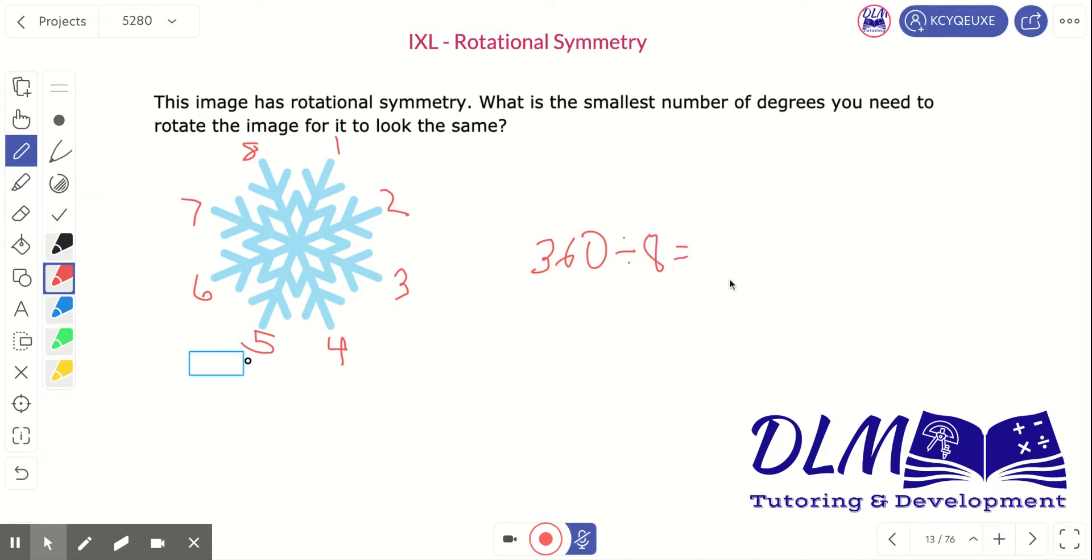How many degrees to rotate it in the least? This is going to give us 45 degrees. And if you're writing this on a piece of paper, don't forget to give that degree symbol.